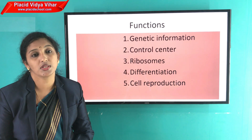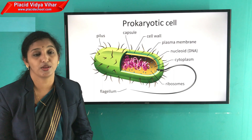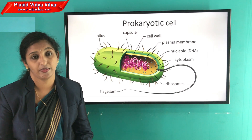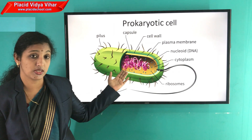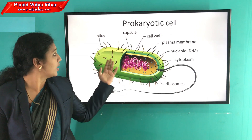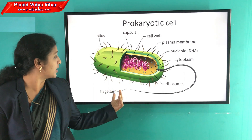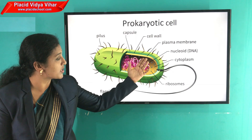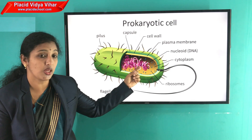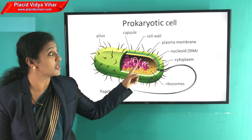In the introduction we discussed the prokaryotic cell and the eukaryotic cell. The difference is in the nucleus or nuclear material. In prokaryotes, there is no membrane-bound nucleus; instead, the nuclear material is just scattered in the cytoplasm. This is a bacterial cell — you can see structures like pilus, flagellum, capsule, plasma membrane. Instead of a nucleus they have a nucleoid. In eukaryotes we call it a nucleus, but in prokaryotes we call it a nucleoid.